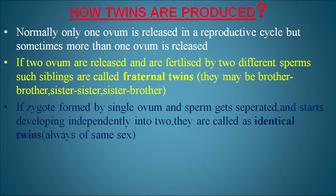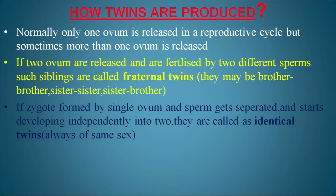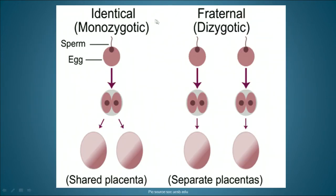The hormones involved in lactation are prolactin and oxytocin. Prolactin is released by the placenta and oxytocin by the posterior pituitary. Normally one ovum is released per reproductive cycle, but sometimes more than one is released. If two ova are released and fertilized by two different sperms, such siblings are called fraternal twins — they may be brother-brother, sister-sister, or sister-brother. If a zygote from a single ovum and sperm separates and develops independently into two, they are called identical twins. Identical twins are always of the same sex and are monozygotic, while fraternal twins are dizygotic with separate placentas.